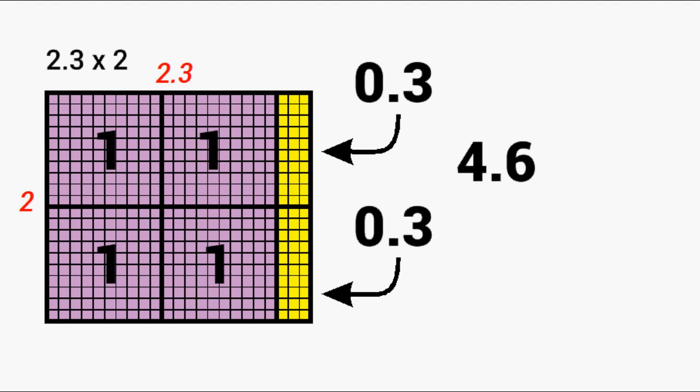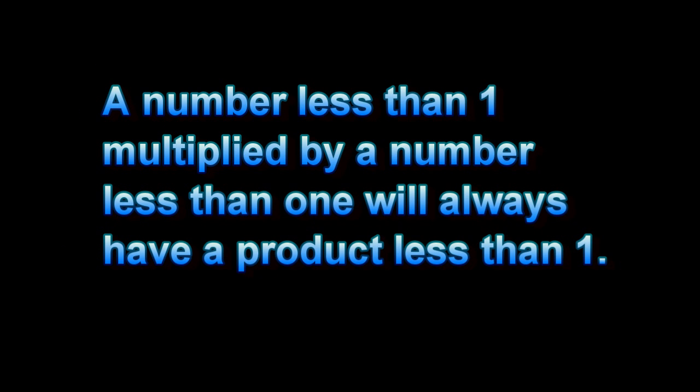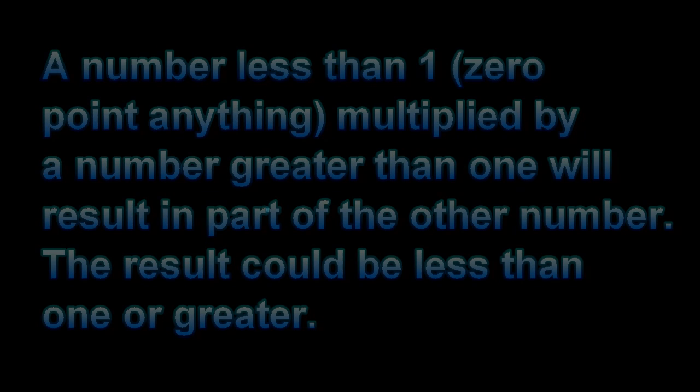A few things that we should keep in mind: whenever you are multiplying two values that are less than one whole, such as zero point something times zero point something else, the result will always be less than one whole, which means you will always shade less than one whole of your area model.